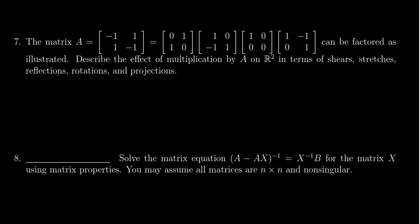We're given a 2x2 matrix A: negative 1, 1, 1, negative 1, which factors into these four matrices. We're supposed to describe the effect that multiplication by A has on the plane R2 in terms of shears, stretches, reflections, rotations, and projections.